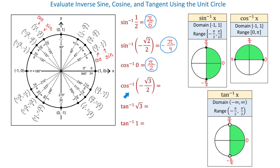Now, what about inverse cosine of negative square root of 3 over 2? On the unit circle, we see two angles whose cosine is negative square root of 3 over 2: that is 5 pi over 6, where cosine is negative square root of 3 over 2, and the other one is 7 pi over 6, where cosine is also negative square root of 3 over 2. Out of these two angles, we will choose 5 pi over 6, because this angle is on the interval from 0 to pi. So inverse cosine of negative square root of 3 over 2 is 5 pi over 6.